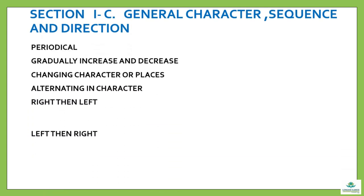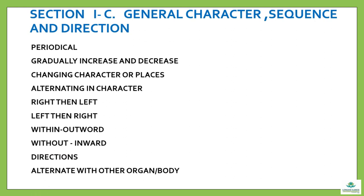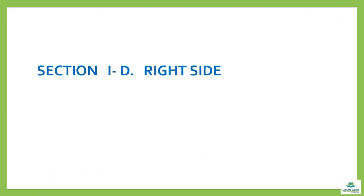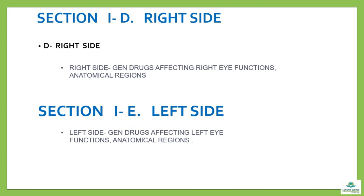Section 1c general character, sequence and direction includes: periodical, gradually increasing and decreasing, changing character or place, alternating in character — right then left, left then right, within outward, within inward, directions, alternating with other organ or body. Section 1d is the right side — general drugs affecting right eye functions and anatomical regions. Section 1e is the left side — general drugs affecting left eye functions and anatomical regions.